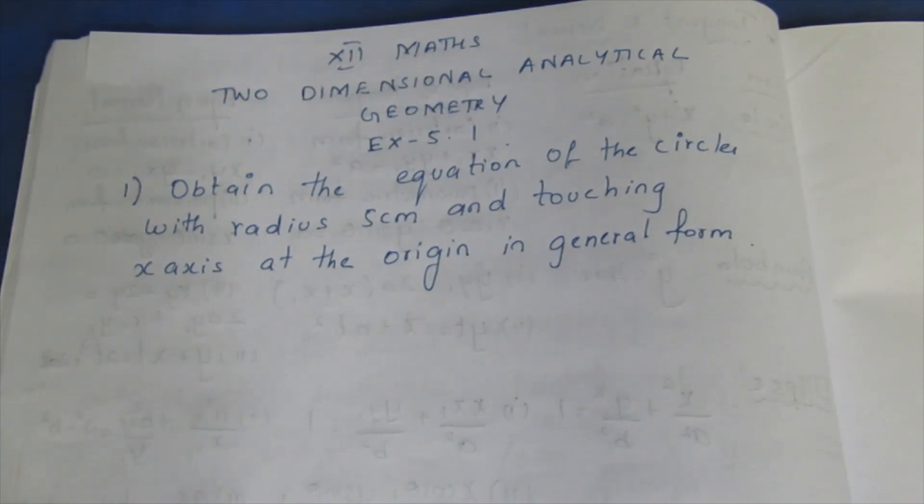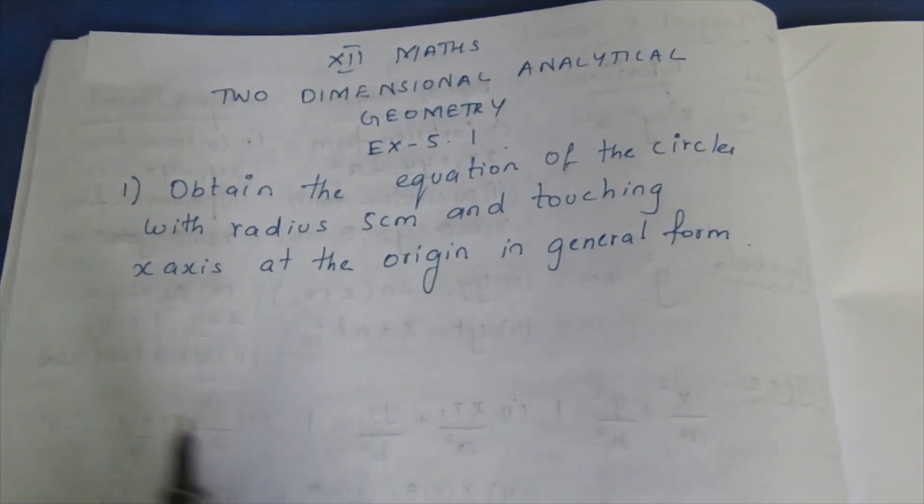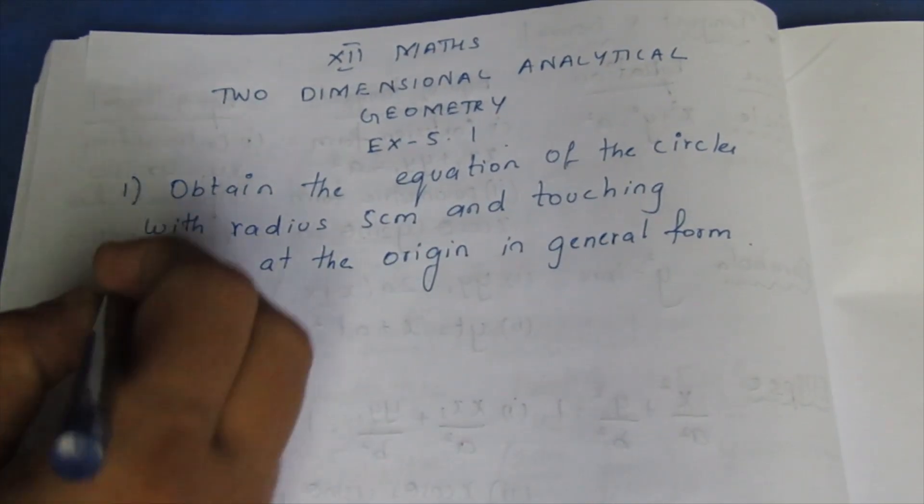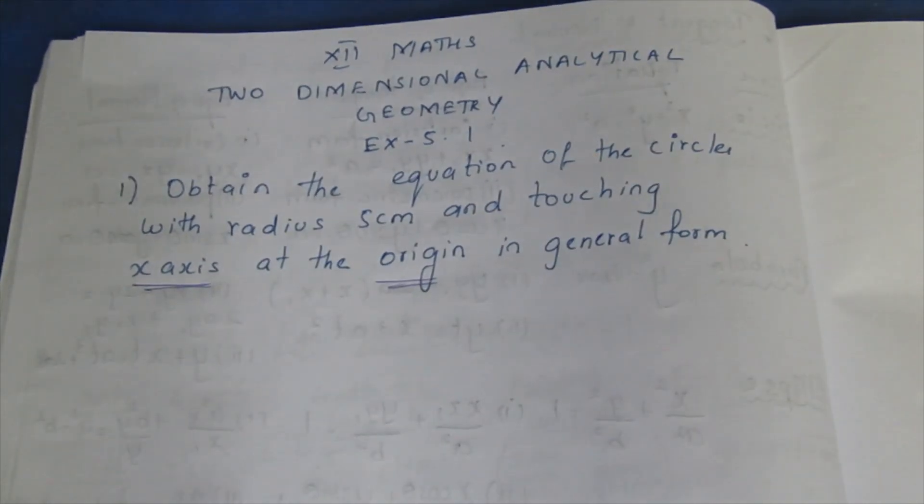Equation of the circles means equation of both circles. Radius 5 cm, the circle of radius 5 cm touching at x-axis at the origin. This is very important.